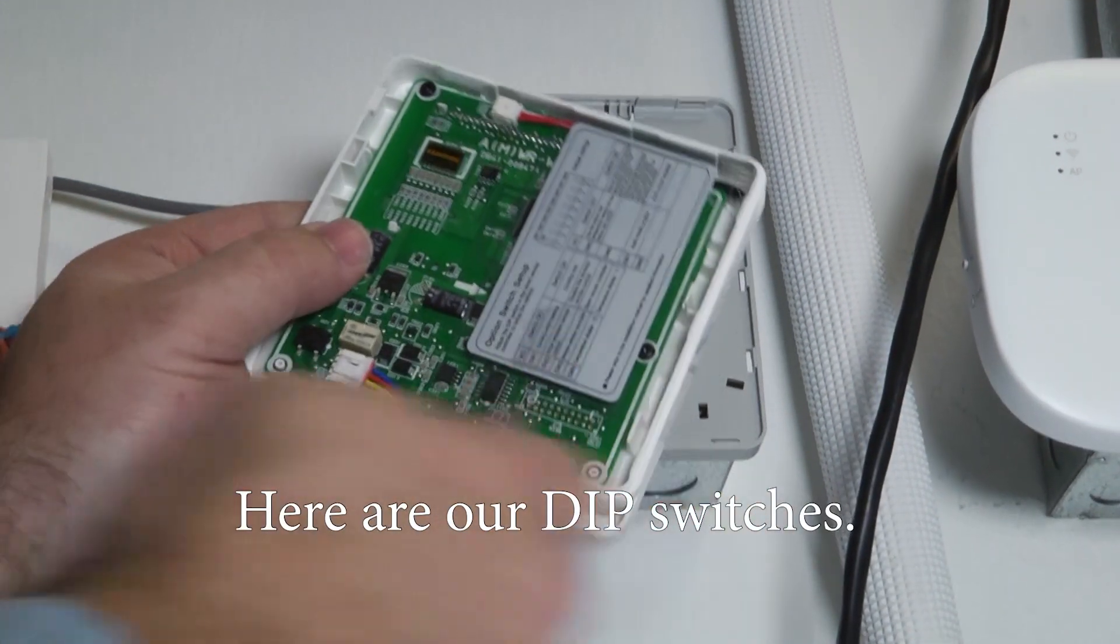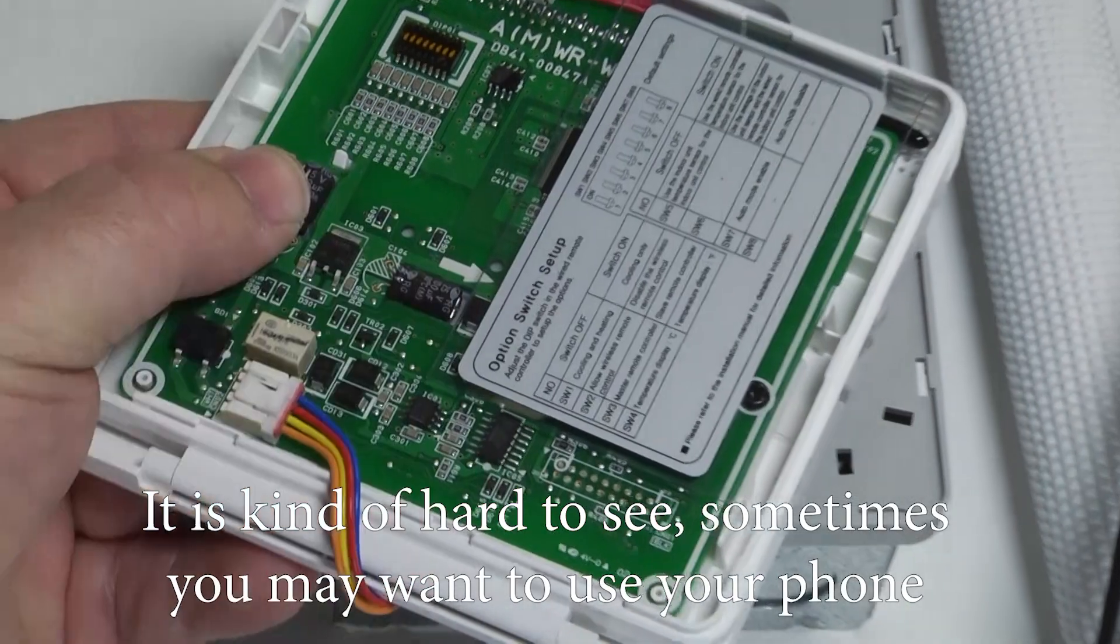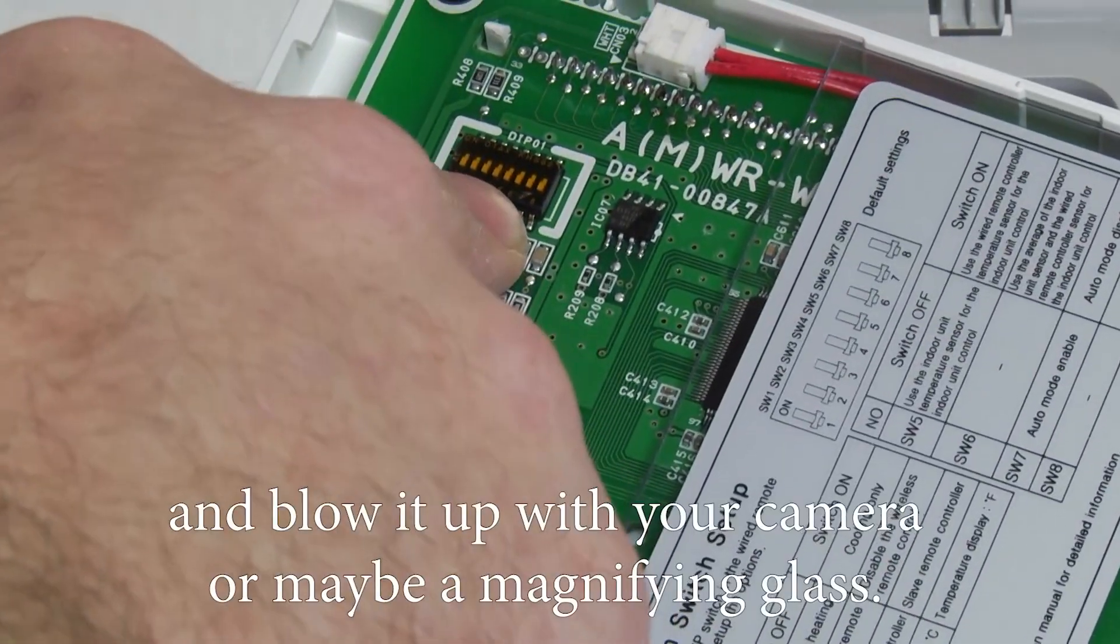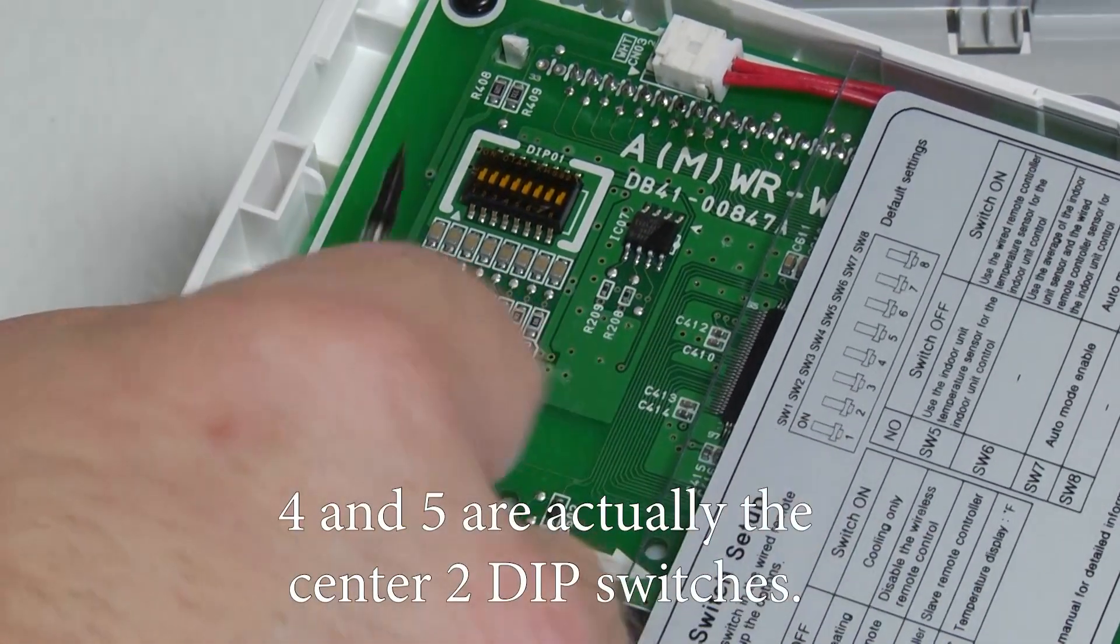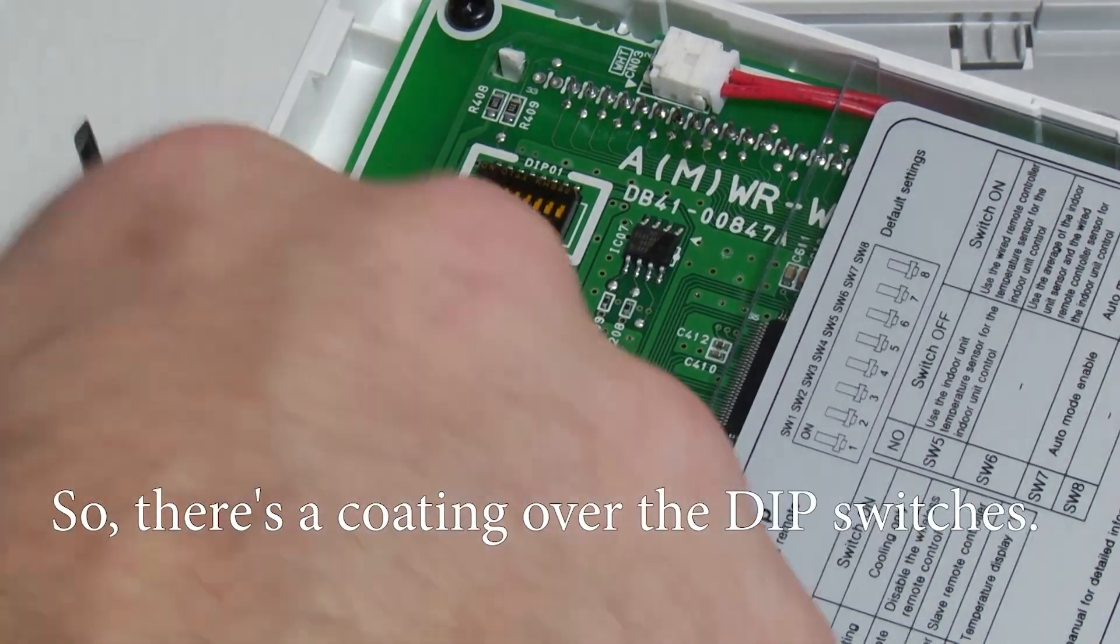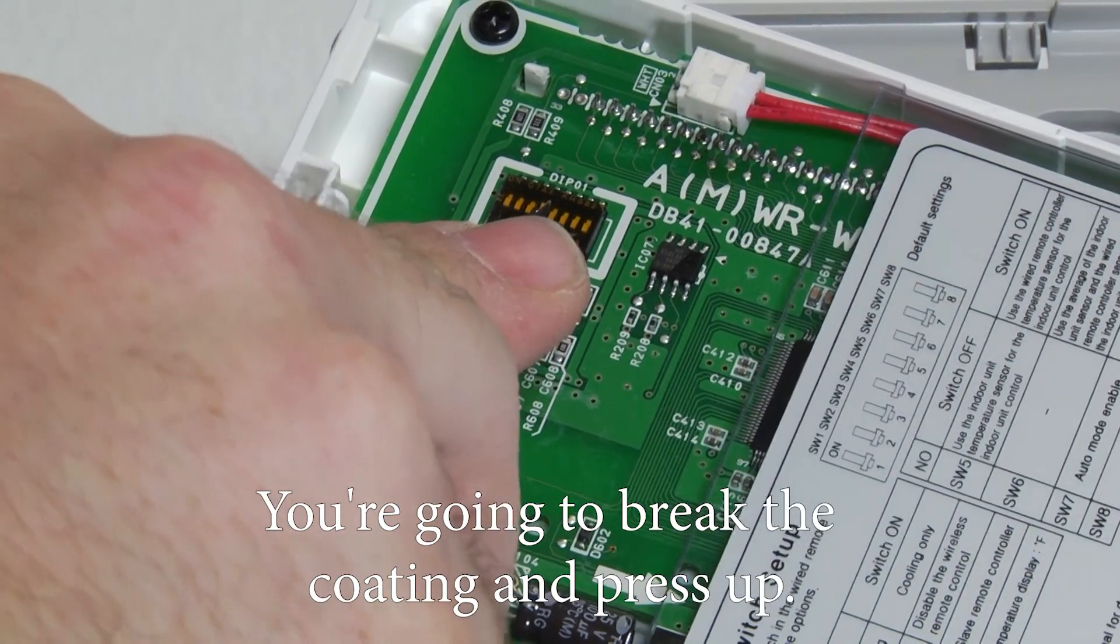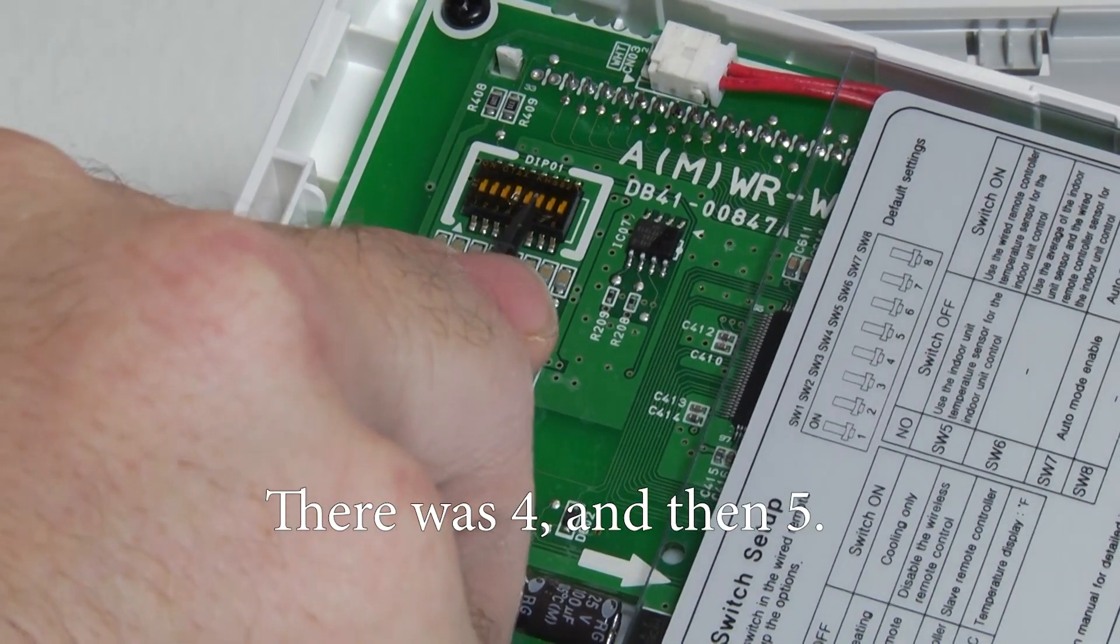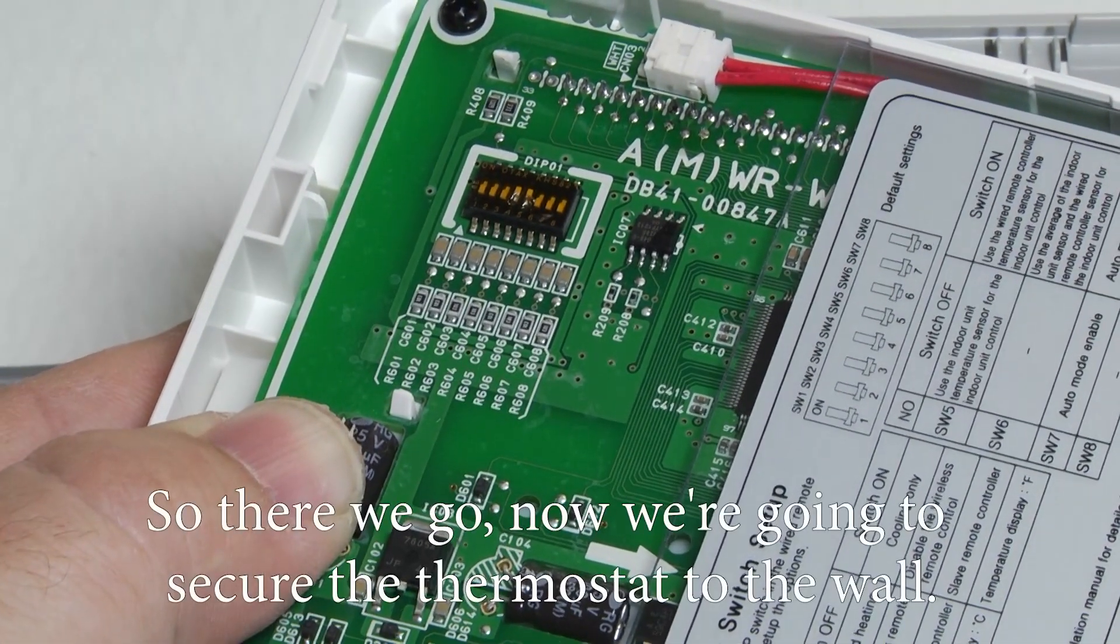So here are our dip switches. It's kind of hard to see. Sometimes you may want to use your phone and blow it up with your camera or maybe a magnifying glass. 4 and 5 are actually the center 2 dip switches. So there's a coating over the dip switches. You're going to break the coating and press up. There was 4 and then 5. Press up. So there we go.